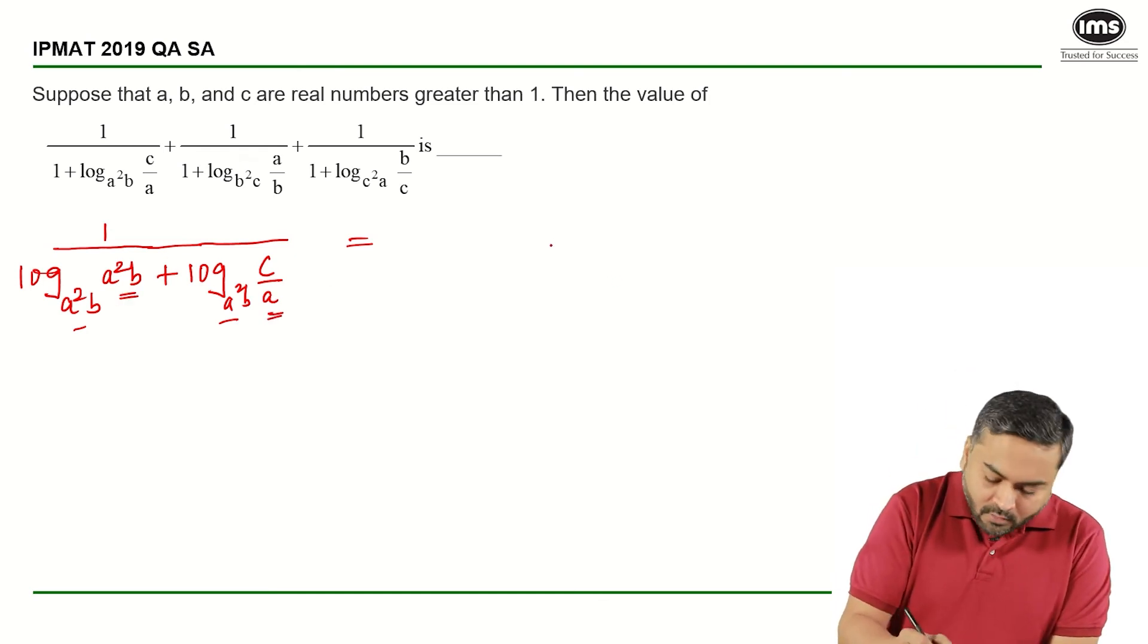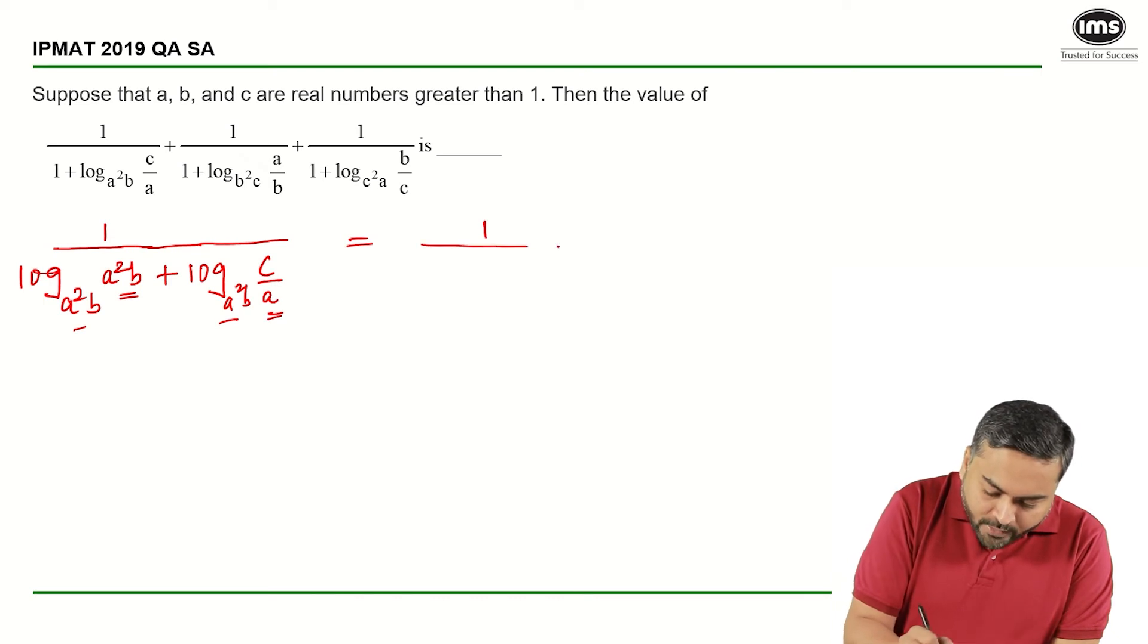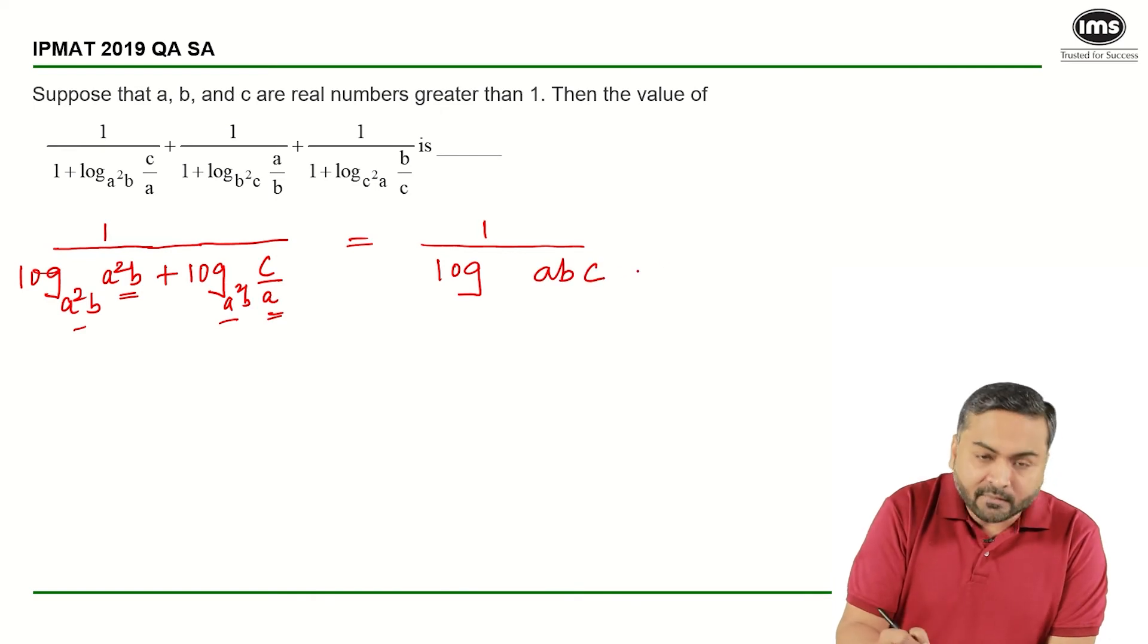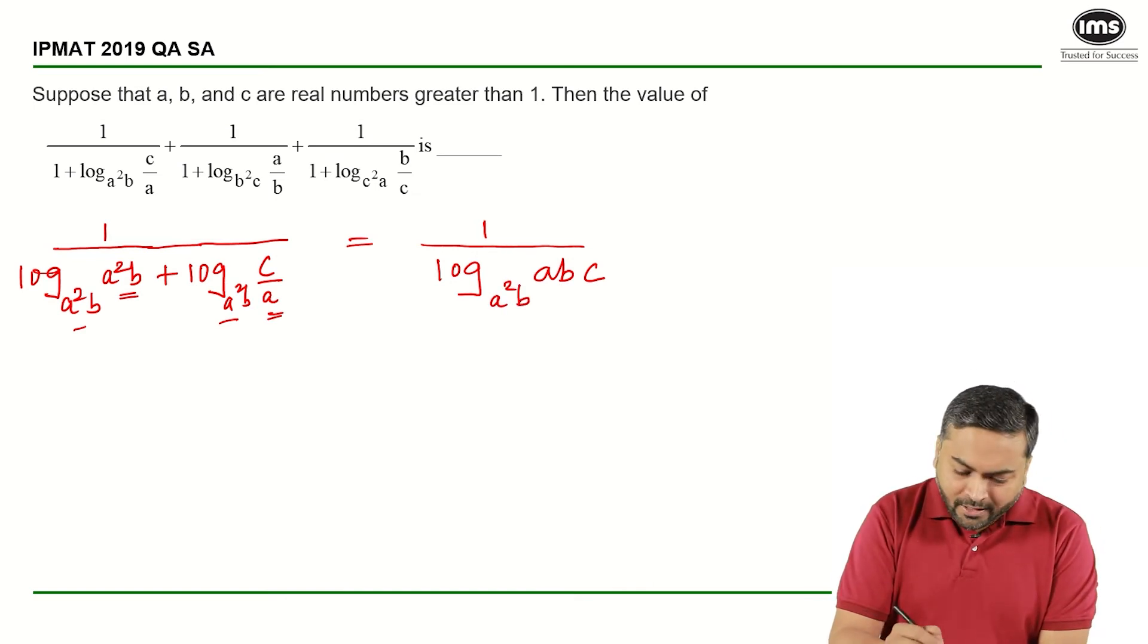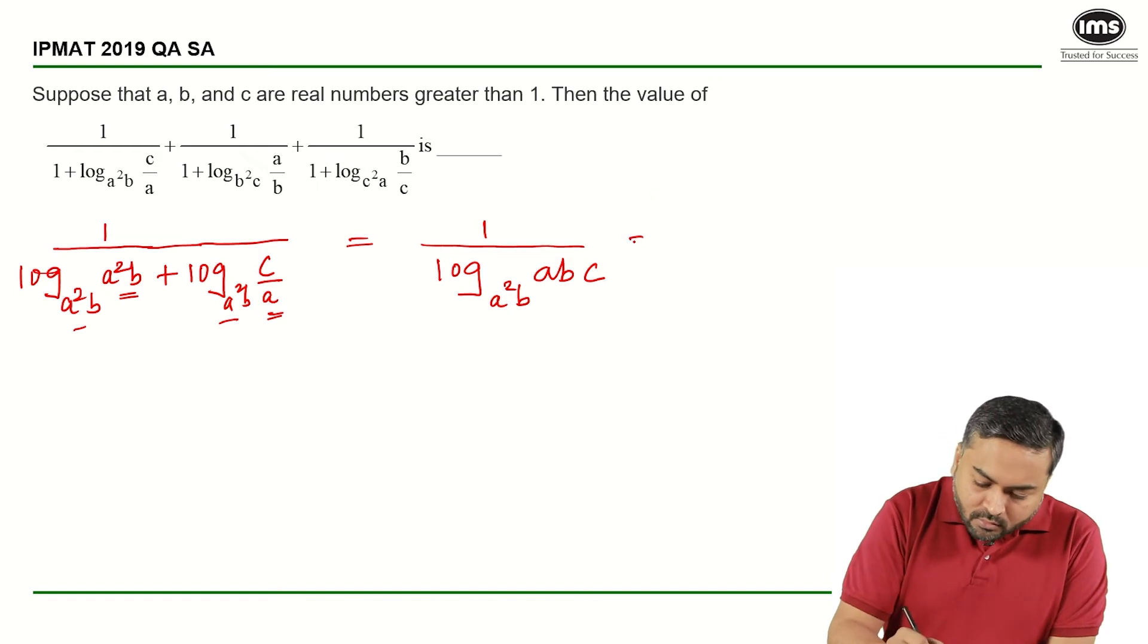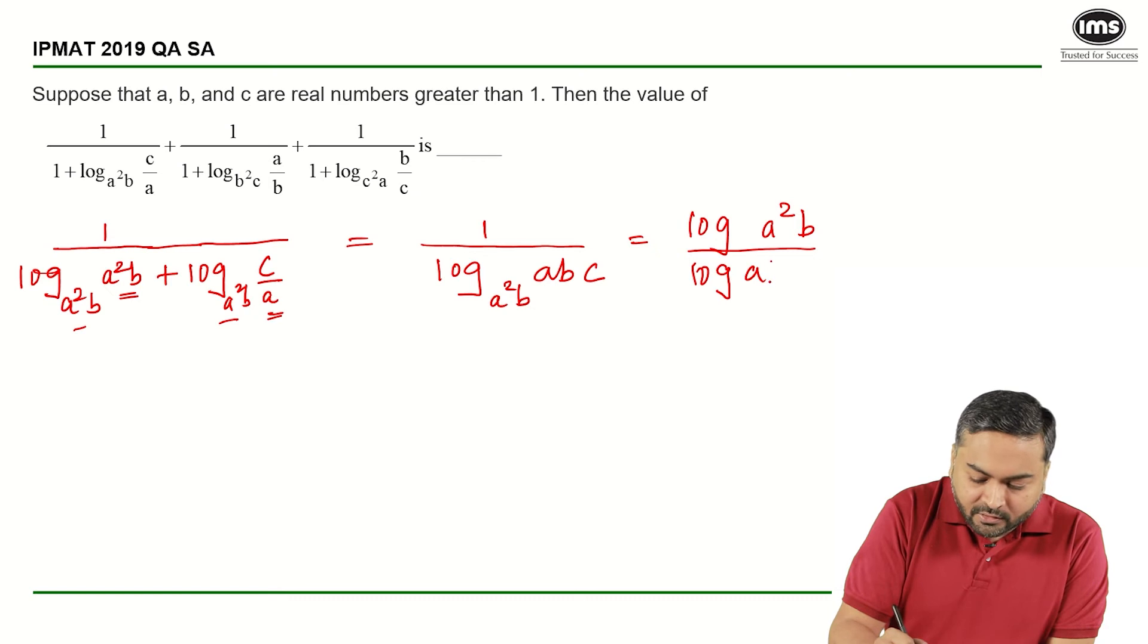So I'll be left with 1 upon log of abc to the base a square b. And now I can take, I can write down this as log of a square b upon log of abc.